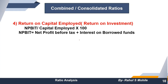Next is return on capital employed (ROCE), also called return on investment. It shows how much return you are getting on the capital employed in the business. Formula: net profit before interest and tax (NPBIT) divided by capital employed, multiplied by 100. This is a very important ratio when evaluating any company investment.